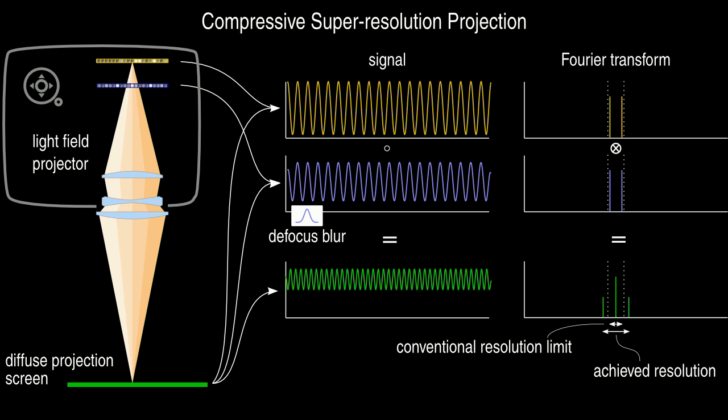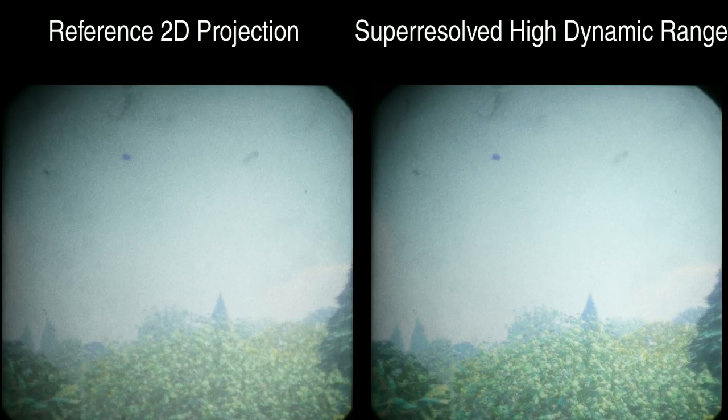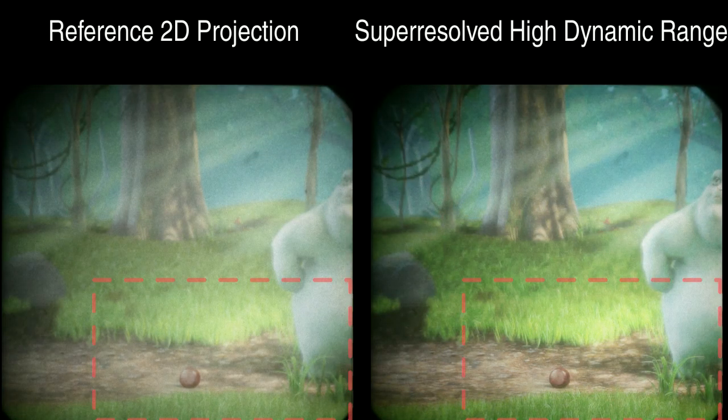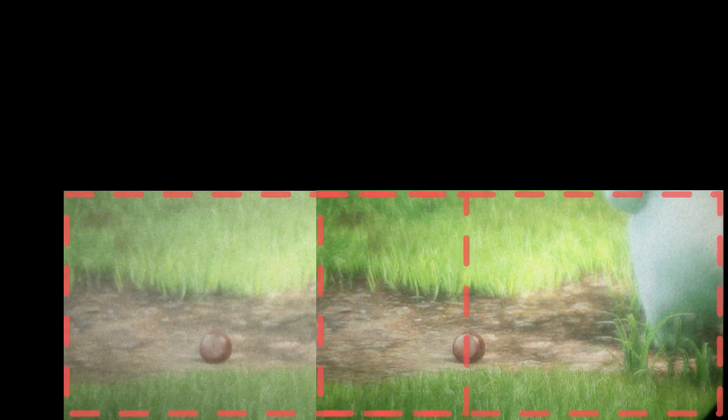Our super-resolution technique allows two low-resolution modulators in conjunction with low-resolution projector optics to create a high-resolution image. We process a sequence of images from the Peach open-movie project Big Buck Bunny for high-dynamic range and super-resolution display on our prototype. The reference image on the left is generated using a single SLM in our projector. It is lower contrast and lower resolution than the imagery produced by our super-resolution algorithm.